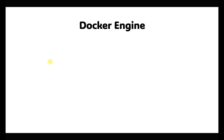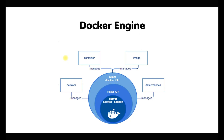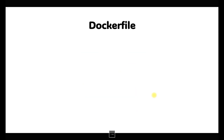Before diving into the labs, let's quickly go through two slides on what the Docker engine does. We have the Docker daemon and the Docker client, where we write commands. These two are connected via the REST API. What Docker engine does is it manages networks, containers, images, and data volumes — so whatever is required for our container is handled by the Docker engine.